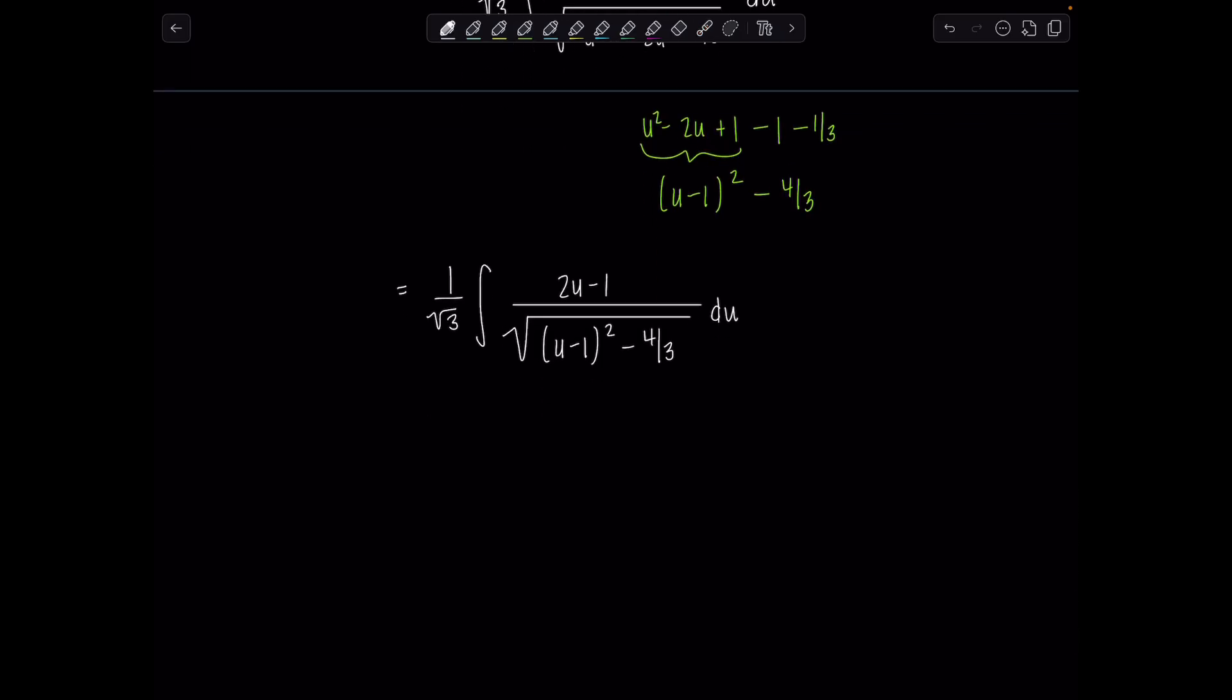So I'm going to split this into two integrals. I'll put the 1 over rad 3 back later. Integral 1 is 2u over square root u minus 1 squared minus 4 thirds du. And integral 2 for now is negative 1 over square root u minus 1 squared minus 4 thirds du. And then at the very end, when I finish these, I'll put the 1 over rad 3 back.